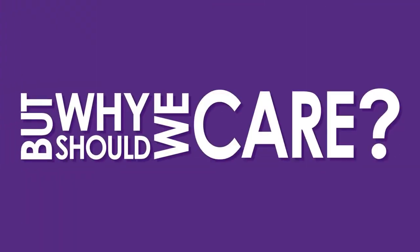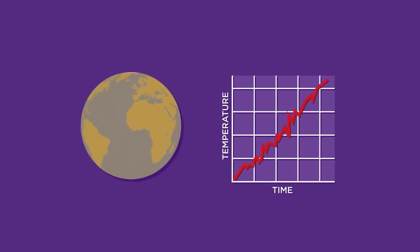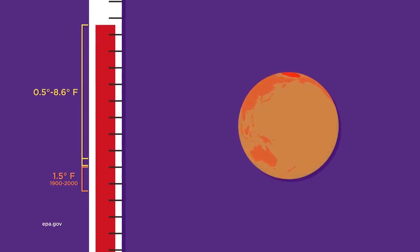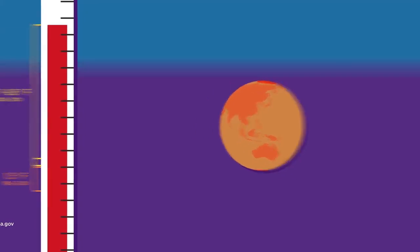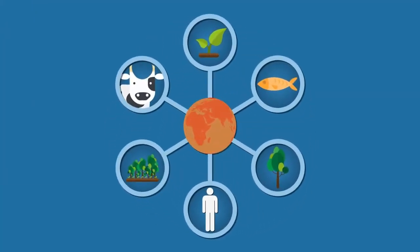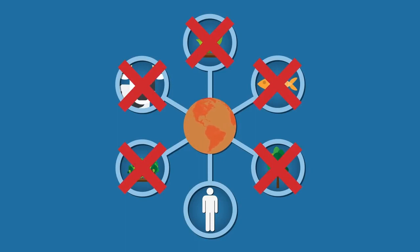But why should we care about global warming and climate increasing? The Earth's temperature has risen 1.5 degrees Fahrenheit over the past century and is projected to rise another 0.5 to 8.6 degrees Fahrenheit over the next 100 years. Animals and plant life are struggling to adapt to these conditions for survival. If even one species goes extinct, it can create a domino effect with the food chain. No living plants or animals means no living humans.